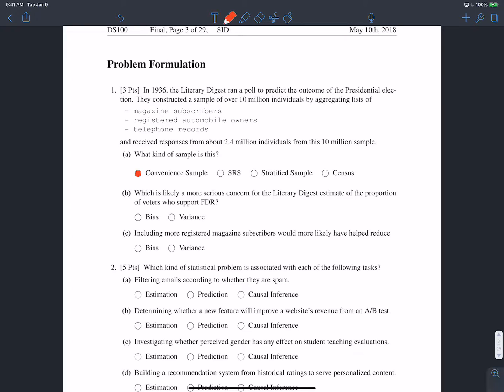In part B we're asked which is likely a more serious concern and in this case that's bias, and this is something we talked about in either discussion 0 or discussion 1. People in 1936 who own automobiles and have telephones and that sort of thing are likely to have more money than people who don't at that time. So this sample would be biased in favor of those people.